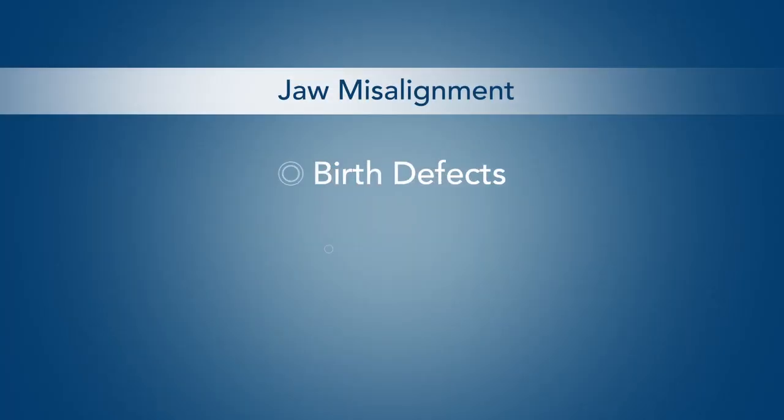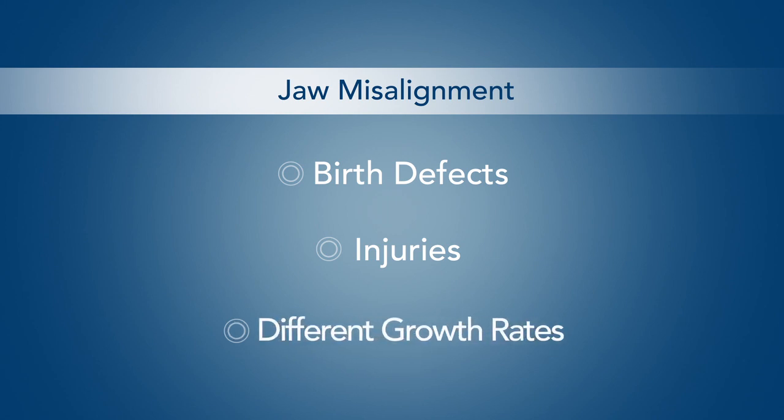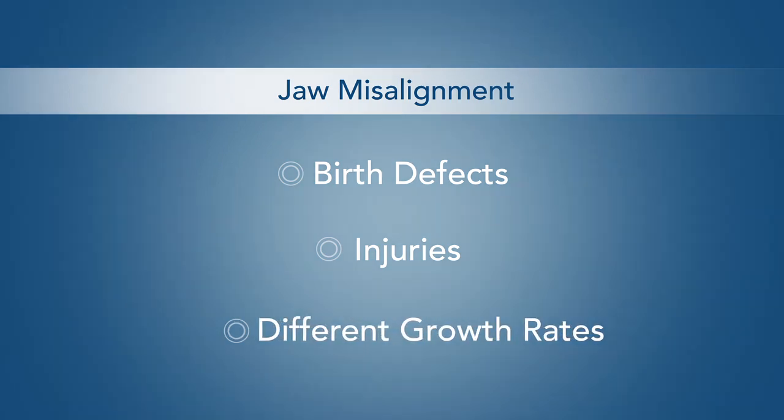Jaw misalignment can be caused by birth defects, injuries to the face and jaw, or because the upper and lower jaw grew at different rates.